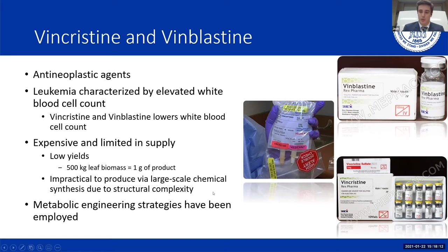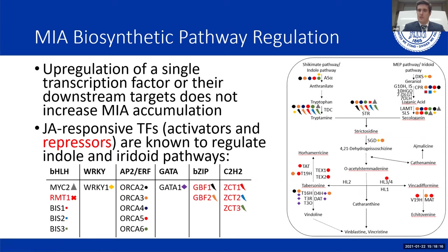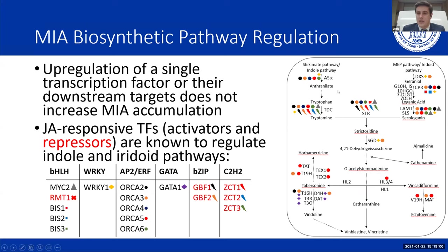There is a problem: vincristine and vinblastine are expensive and in limited supply because the plant produces them in low yield — it takes about 500 kg of Catharanthus leaf biomass to produce just one gram of product. Chemical synthesis at large scale is impractical due to structural complexity. Metabolic engineering strategies have been employed, but there's a challenge: you can't just upregulate a single transcription factor or downstream targets to get a net increase in MIA accumulation. Instead, there's a large regulatory feedback loop controlled by a plethora of JA-responsive transcription factors that activate or repress known pathway points.